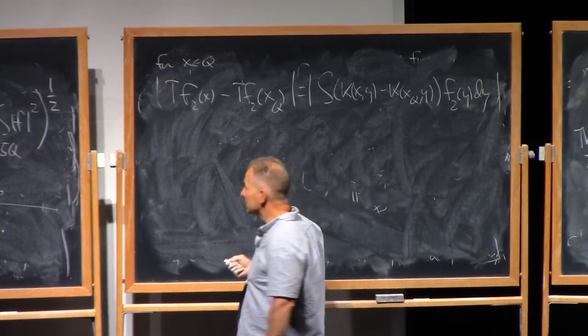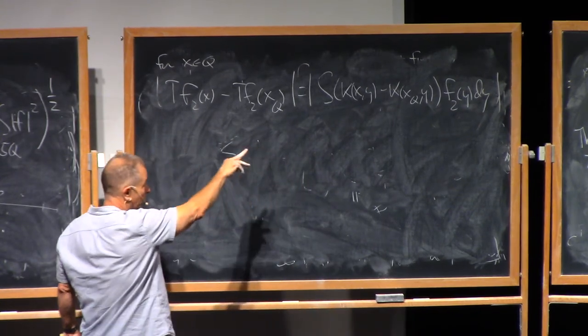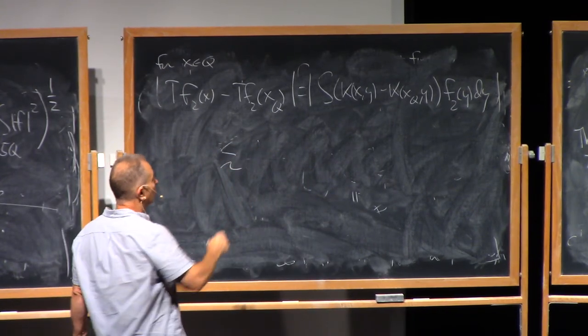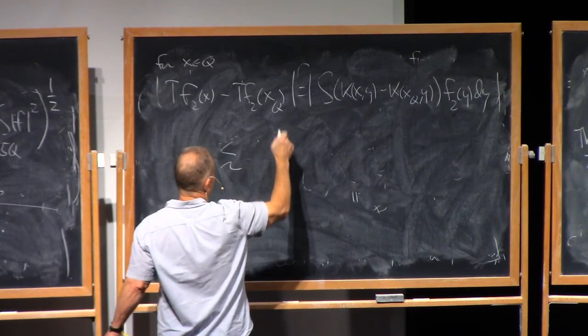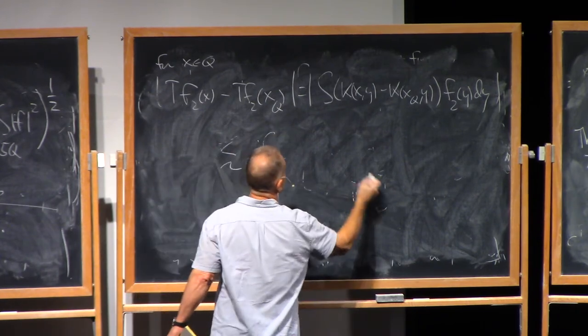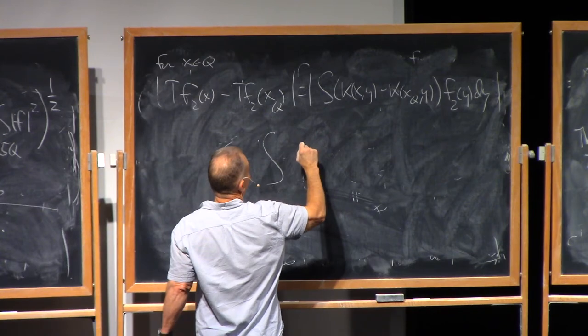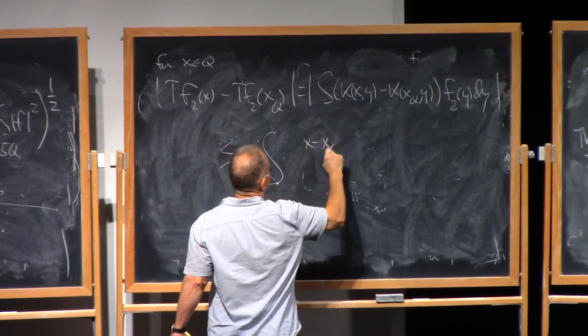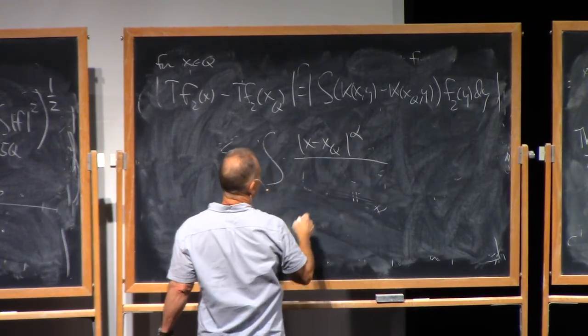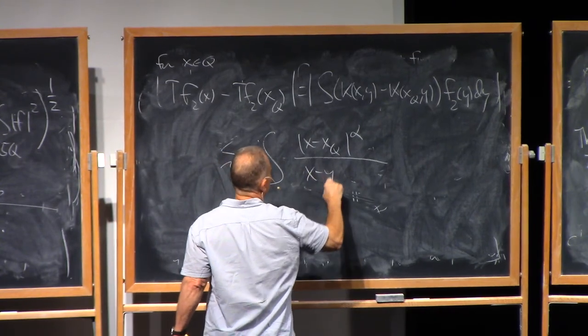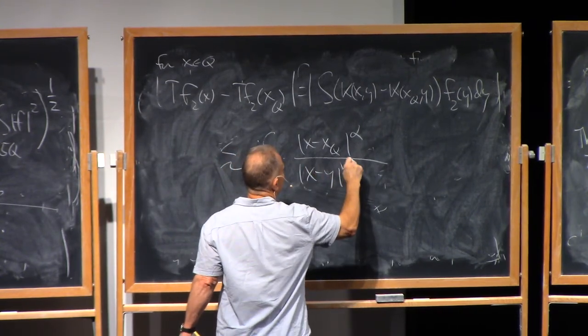And this makes sense because of the Calderón-Zygmund smoothness condition. This is going to be less than when we bring absolute values in, use the Calderón-Zygmund smoothness condition. We're going to have X minus XQ to some positive power alpha divided by X minus Y to the power N plus alpha.